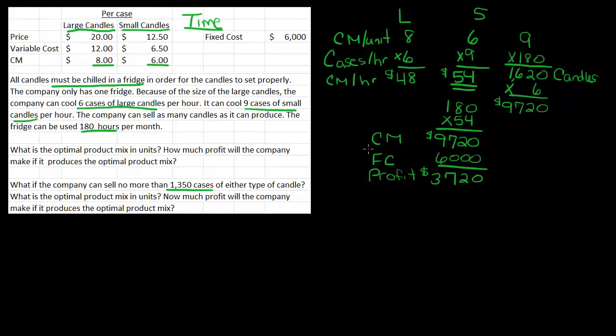So how do we figure that out? Well, we can sell 1,350 cases of small, divided by 9 cases per hour, and that gives me 150 hours. So it takes 150 hours to make 1,350 cases.